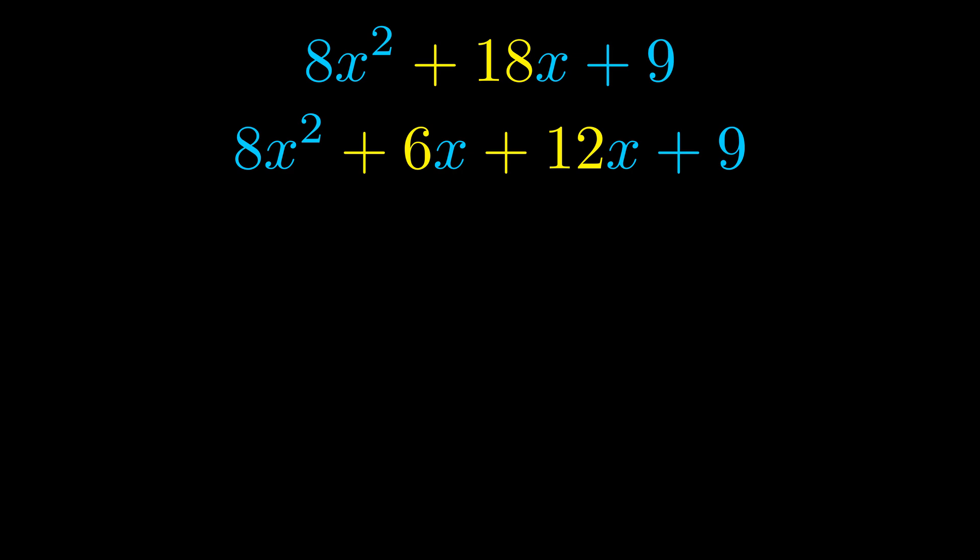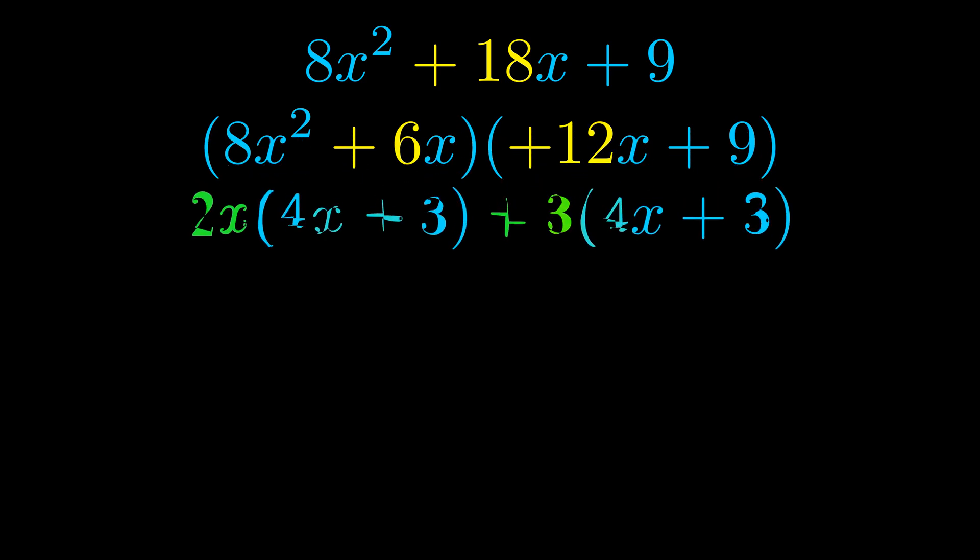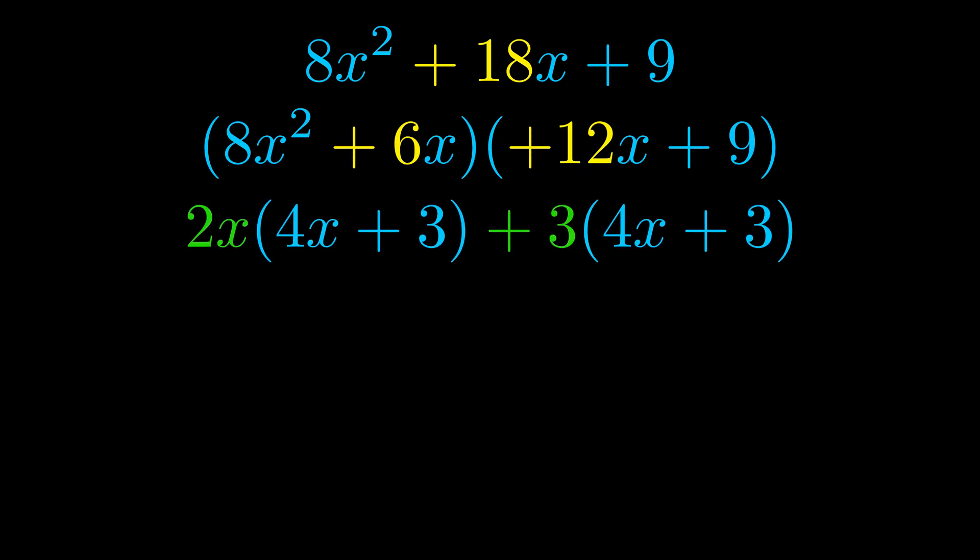Once we've done this, we go ahead and put parentheses around the first term and the last term. And we do that so that we can take the greatest common factor out of both terms. We can see the greatest common factor is now outside in green.